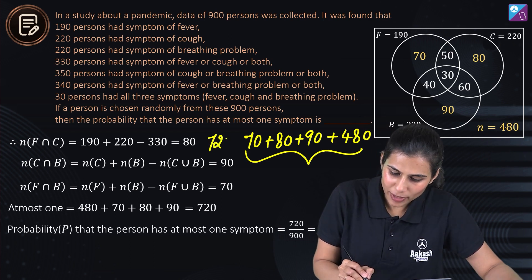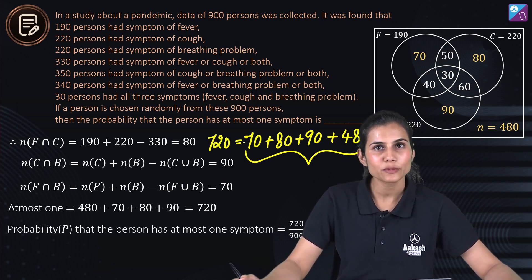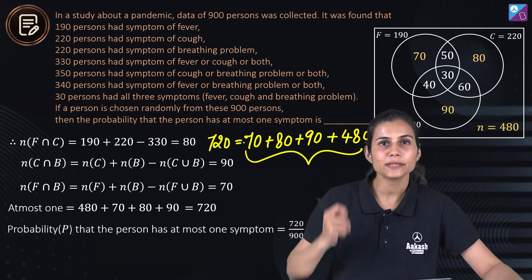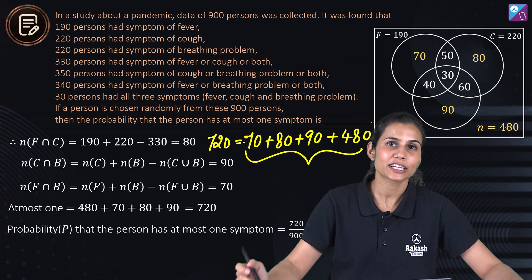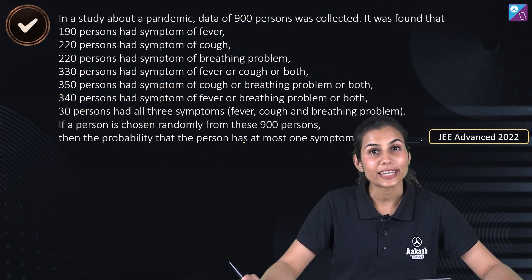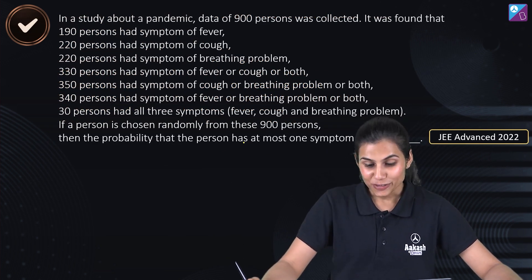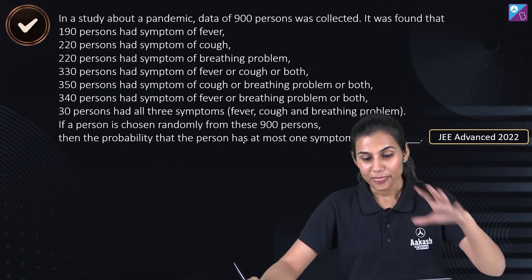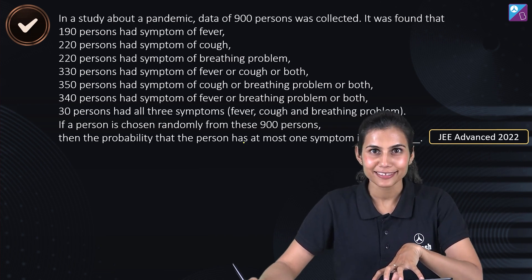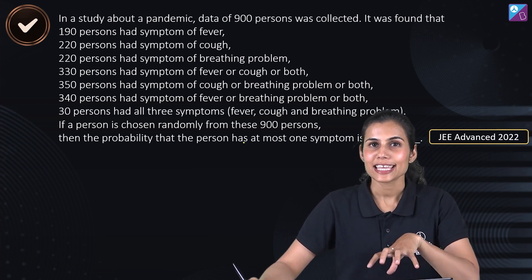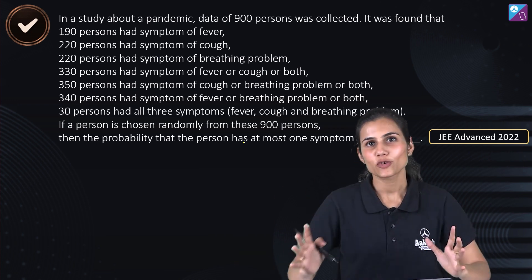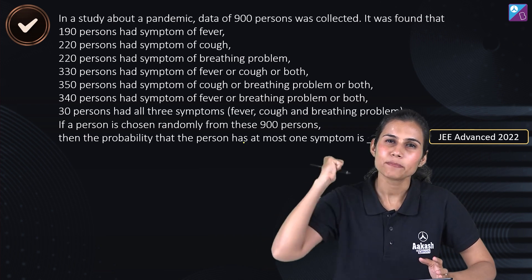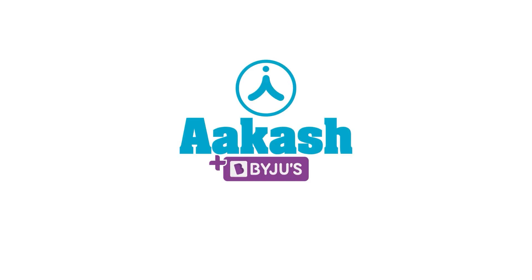Adding 70 + 80 + 90 + 480 = 720, which is the total number of favorable outcomes. Dividing by the total number of persons, 900, gives 720/900 = 4/5 = 0.8. This was a very nice question and a reminder that you should start taking sets seriously — if you get questions like these in JEE Advanced, you should be able to solve them completely.